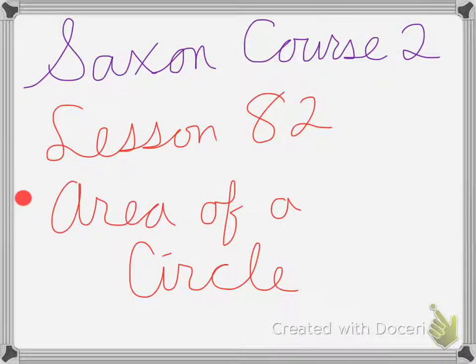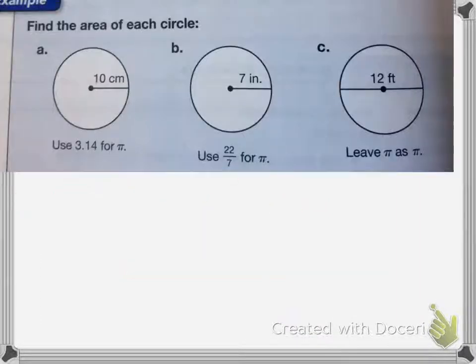Hey, Saxon Course 2 Lesson 82 is on the area of a circle. So let's just find the area of each of these circles.